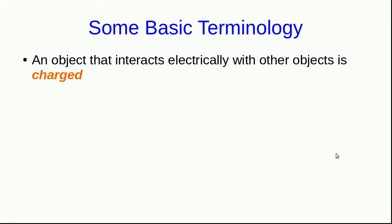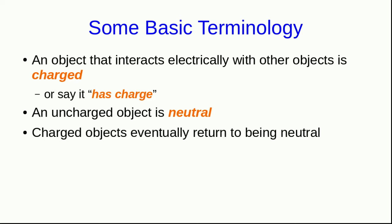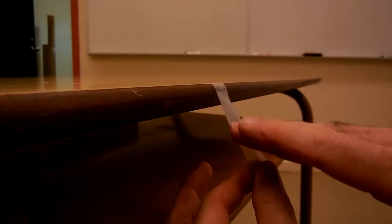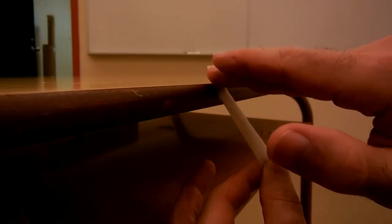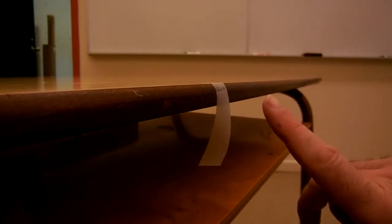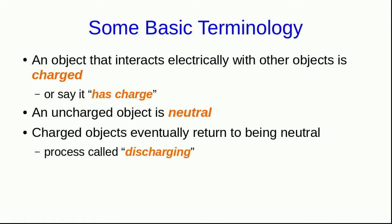There's some terminology that you need to be familiar with. When an object interacts electrically with other objects, we say that that object is charged, or we say that that object has charge. An uncharged object is referred to as neutral, and charged objects don't remain charged. They eventually return to being neutral. For example, if you take your charged piece of tape and stick it to the edge of a desk and leave it for a while, it'll eventually lose its charge. Or you can speed up the process by touching it all over its surface. The process by which a charged object returns to being neutral is called discharging.